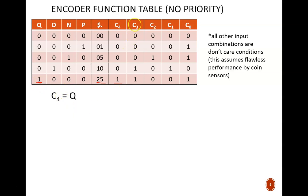When is C3 high? There are two possibilities. Either a quarter or a dime is input. Therefore, C3 equals Q or D.